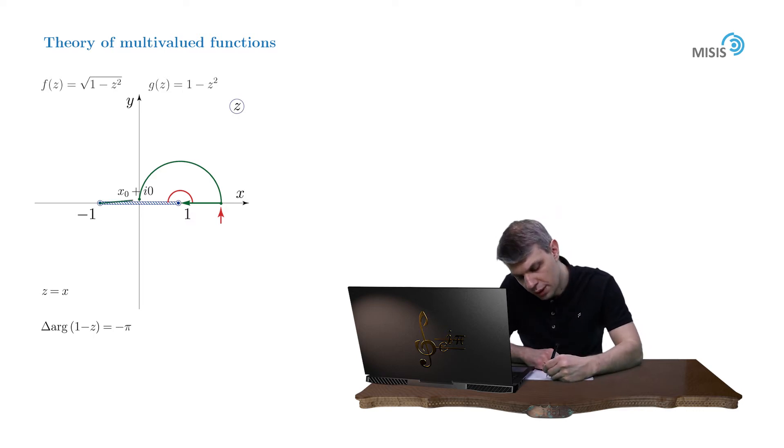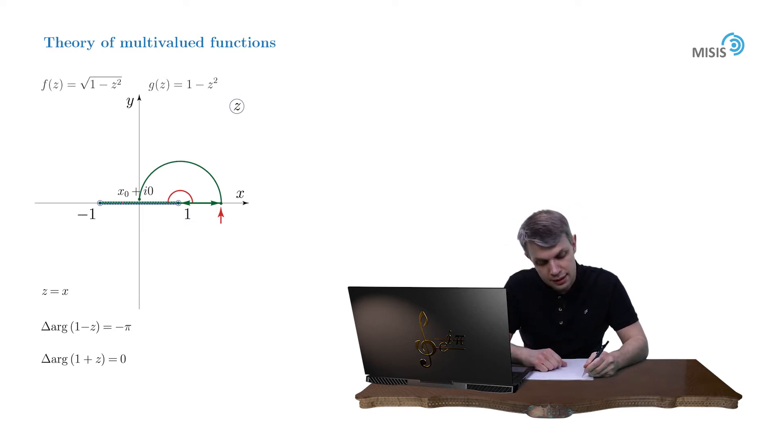Arrow 1 plus z just sways and doesn't turn at all. So delta argument of 1 plus z is 0. And as a result, the change of the argument of function g is minus pi plus 0 is negative pi.